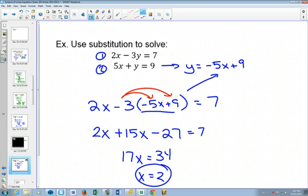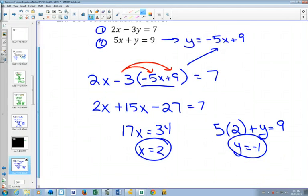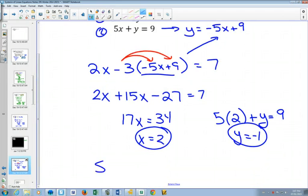Now that I've got X equals 2, I could plug it into either equation. I'm going to plug it into the second one. 5 times 2 plus Y is equal to 9. Subtract 10 on both sides, and I get Y is equal to negative 1. And I now know the point where those two lines intersect. Our solution is 2 comma negative 1.